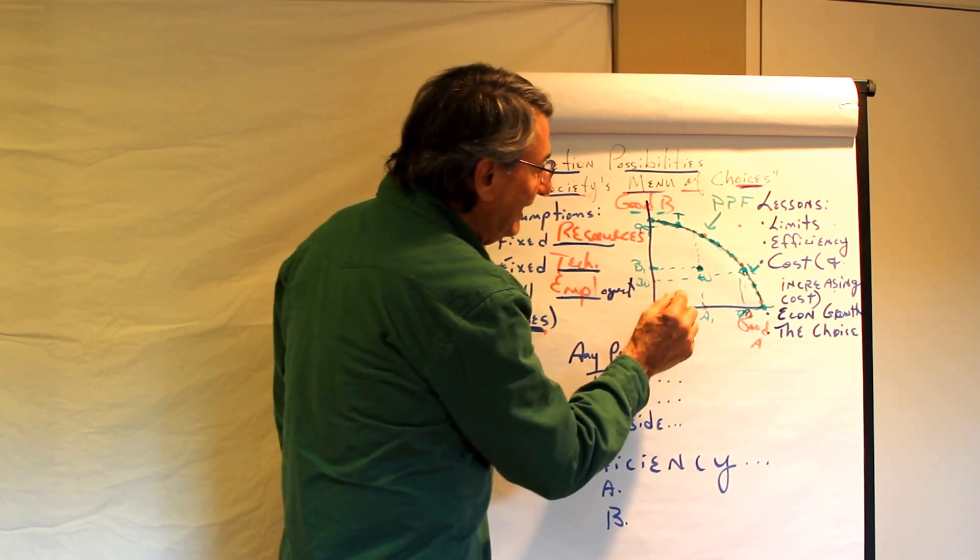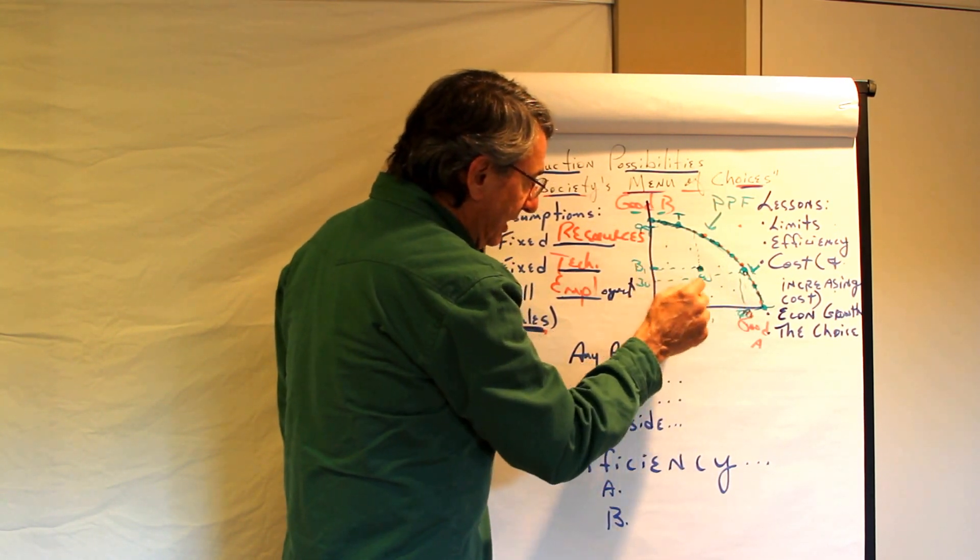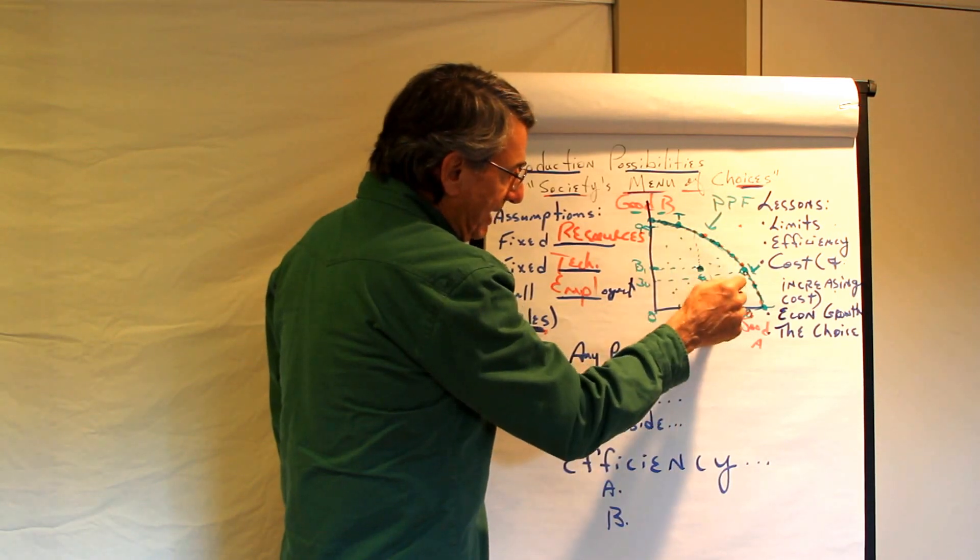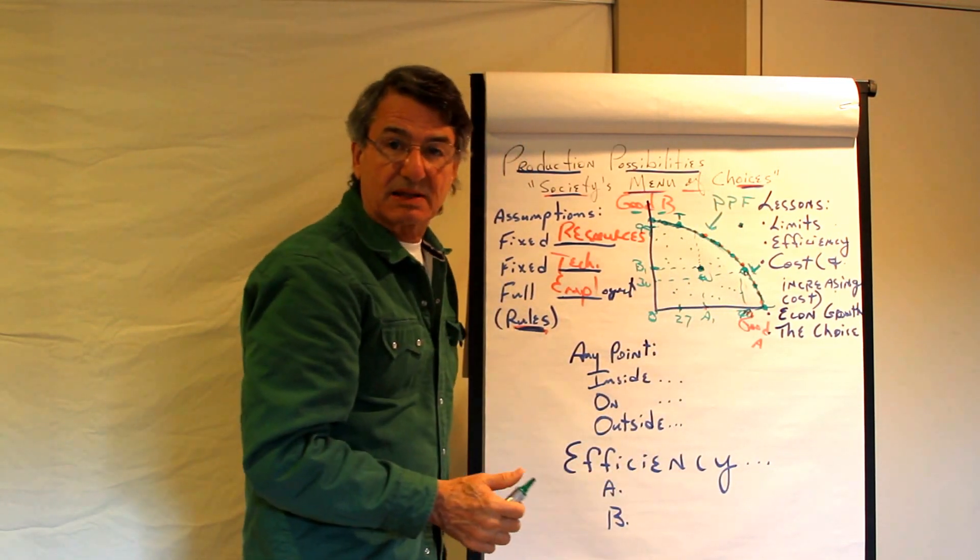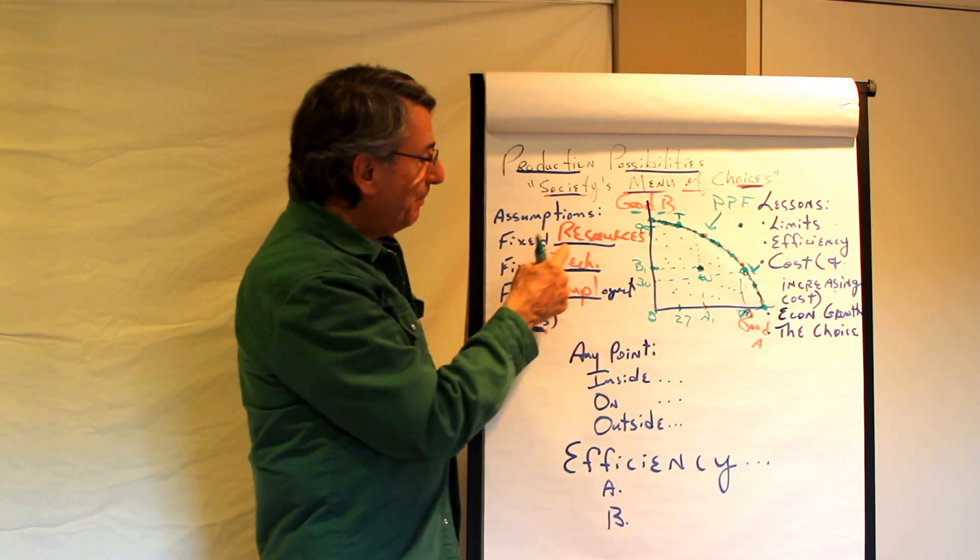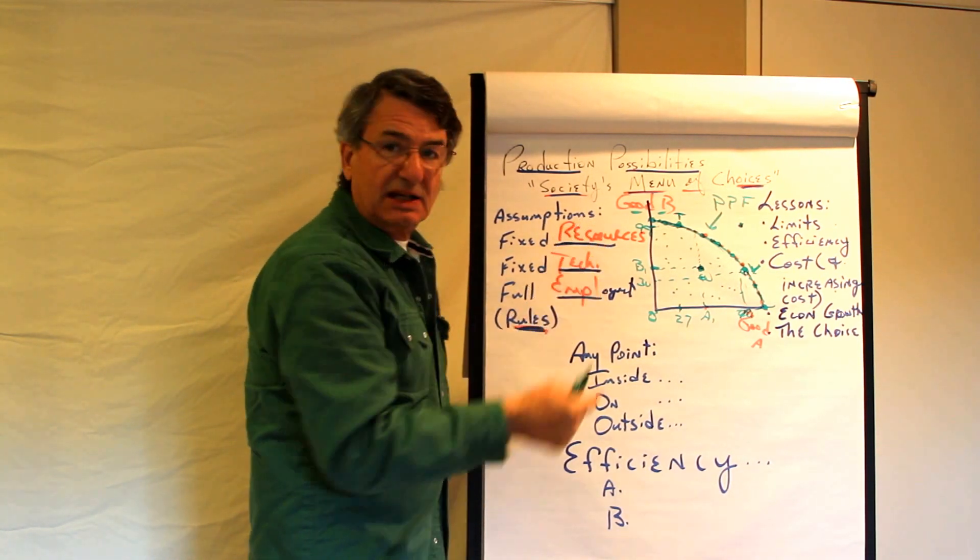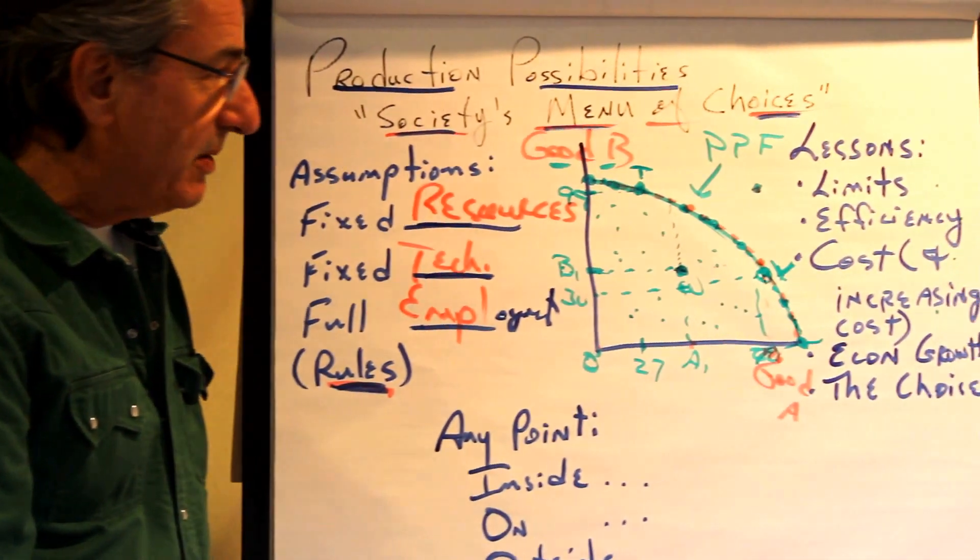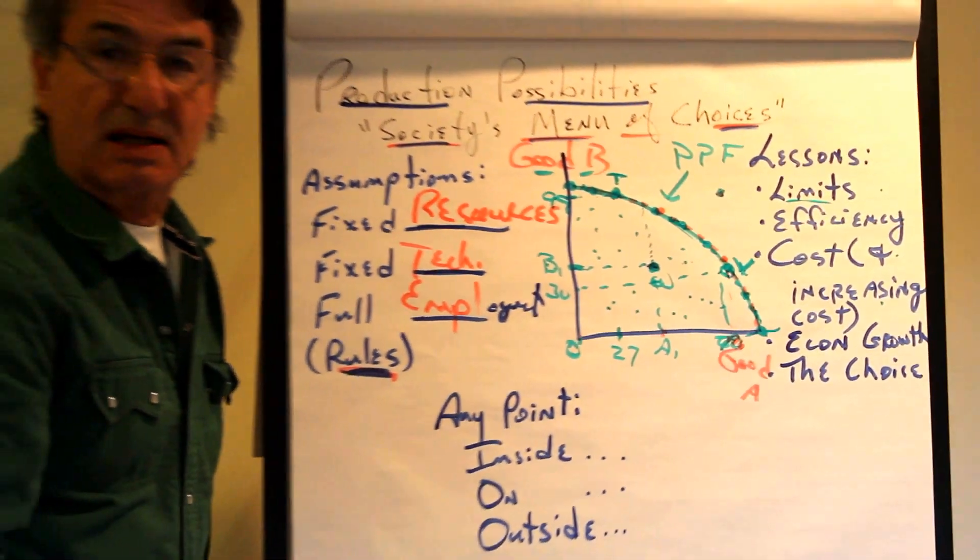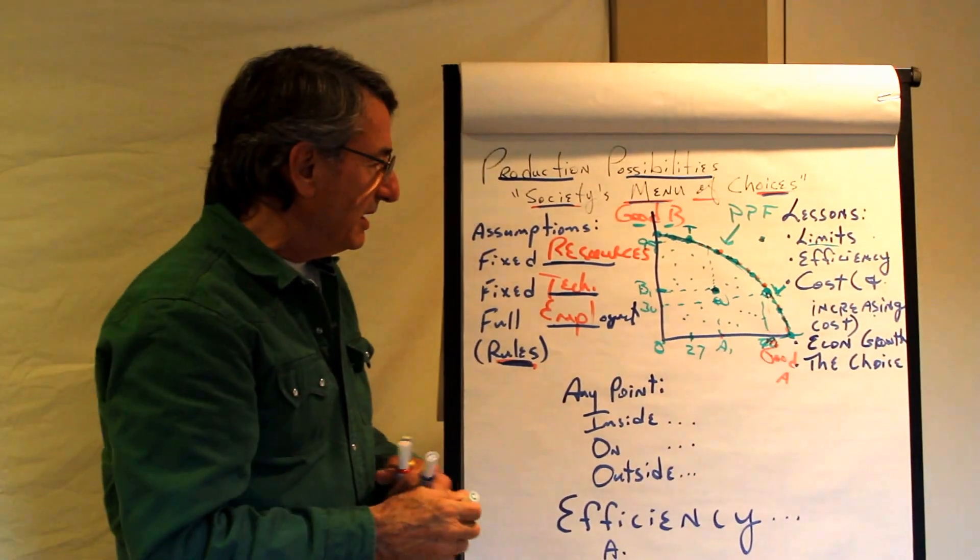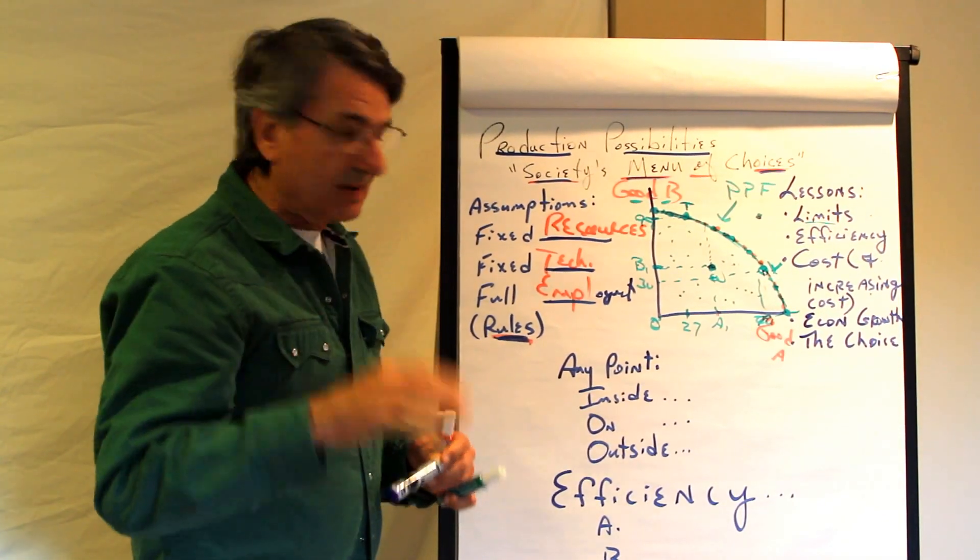So any point inside the production possibilities frontier represents a combination that is possible but not maximum and therefore inefficient. What about a point outside the production possibilities frontier? Not possible given the resources and technology. That's the first lesson about the production possibilities. That limits exist. Scarcity exists. And so the production possibilities frontier at any given time shows the maximum possible.